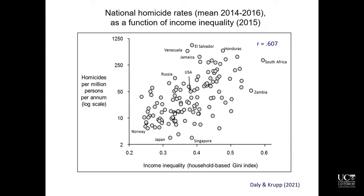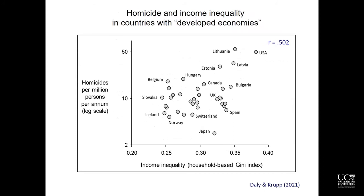That picture changes if you compare the US to other countries that are more comparable with respect to their wealth and development. There are 22 countries the UN classifies as having fully developed economies, and this is a subset of the data just for those countries. You can see that the US now has the worst income inequality of any of them and the second-worst homicide rate, behind Lithuania, which has the worst homicide rate and the second-worst inequality. You'll notice too that all those Baltic countries — those former Soviet republics, Lithuania, Latvia, and Estonia — are all way up there. But the correlation is still strong even within these developed countries.